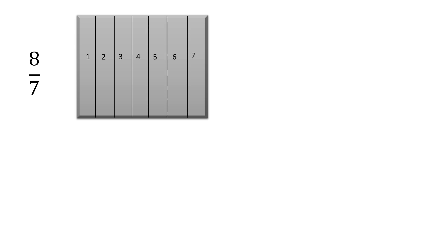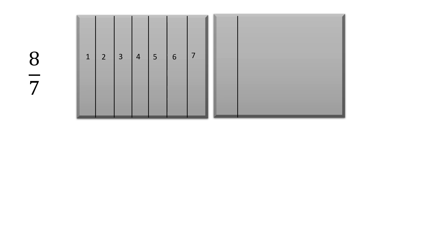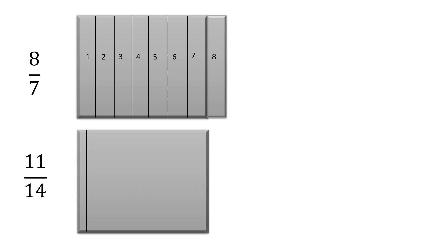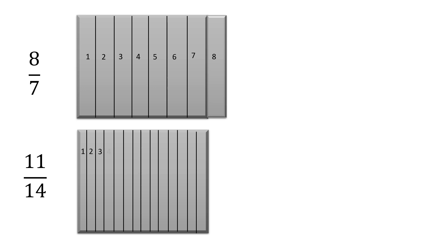Let us see how this is practically possible. Take a shape and divide it equally into 7 parts, since the denominator of 8/7 is 7. Out of those 7 parts, the numerator is 8, so we need to use 8 parts — but we only have 7, so we take another block and use one more part from it. That extra part is our 8th part. For 11/14, we take a block and divide it into 14 equal parts.